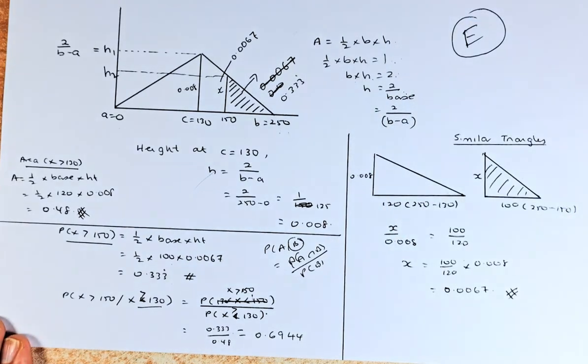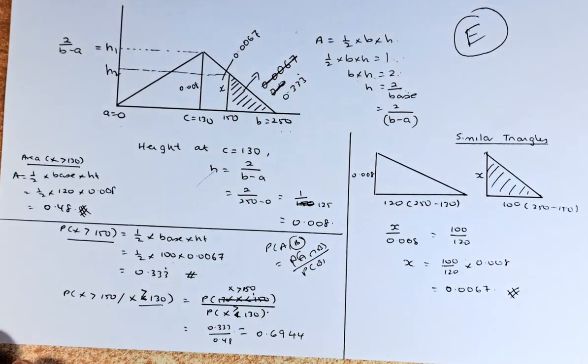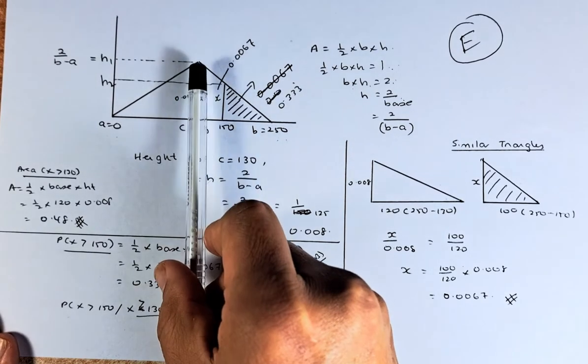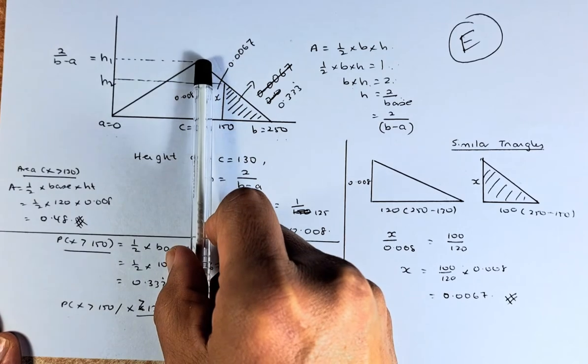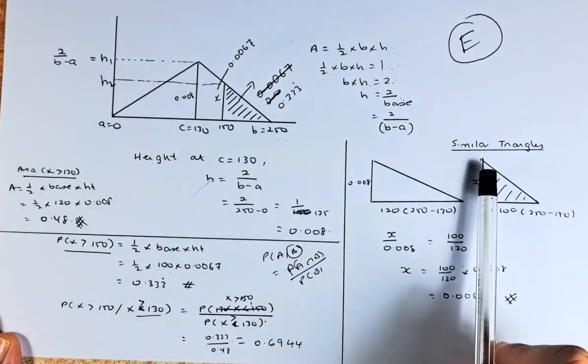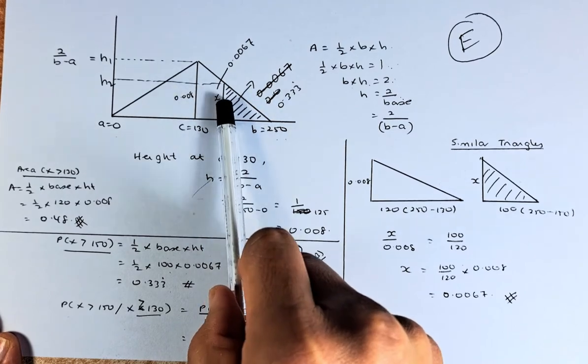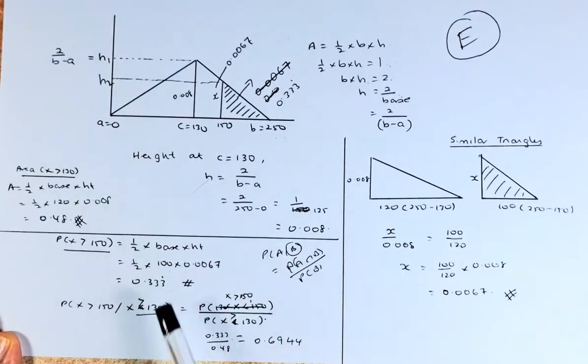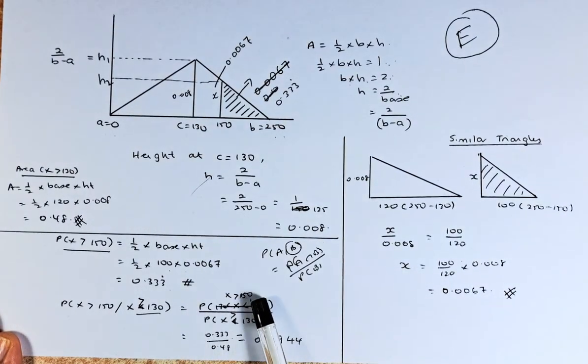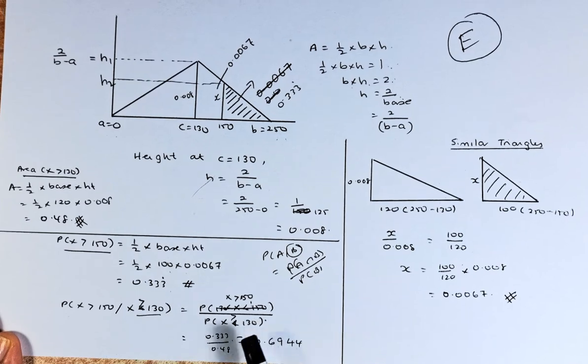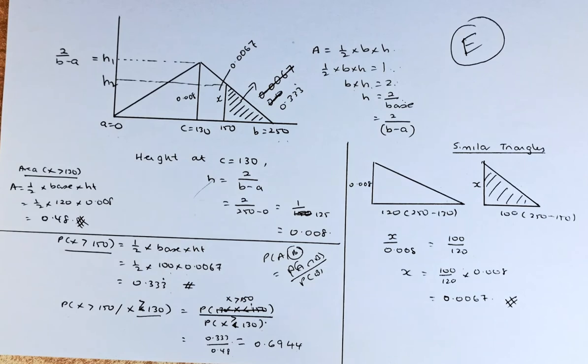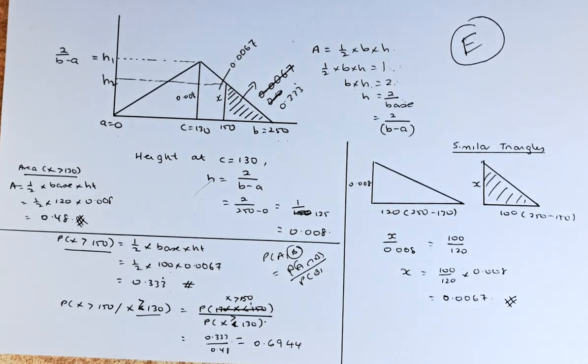So hopefully you go through this triangular distribution again. I repeat: first you calculate the height using this formula. Then you can find the x here, the height here, by using similar triangles. Once you find x, you can find the area here. To calculate what they ask you, spend more than 150, you use this formula: probability x greater than 150 over x greater than 130. Put in the answer: this number divided by that number gives you 0.6944, and that will be an excellent. Hopefully you understand this and I'll see you in the next one. Cheers everyone and have a good day.